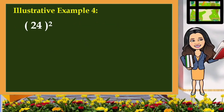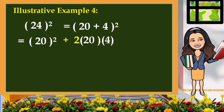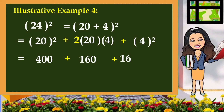Now, let us apply this: if I give you the number 24 and ask you to square 24 without using a calculator, we can apply the process of squaring a binomial. This is the same as the square of the quantity 20 plus 4. Squaring the first term, twice the first and last, and squaring the last term, we get 400 plus 160 plus 16, which is equivalent to 576. So that is the square of 24.